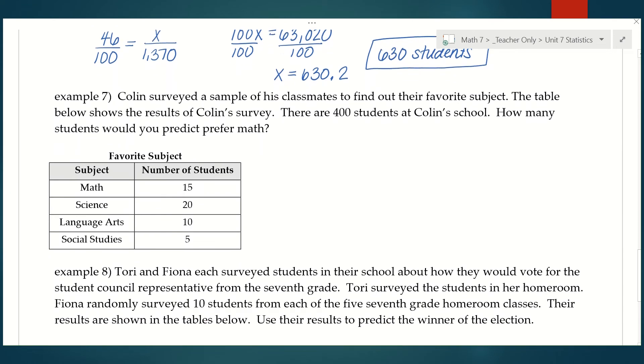Example seven. Colin surveyed a sample of his classmates to find out their favorite subject. The table below shows the results of Colin's survey. There are 400 students at Colin's school. How many students would you predict prefer math? Based on his survey results, we can see that 15 students chose math as their favorite subject. So 15 is my part. To get the whole, I have to figure out how many total students he surveyed, so we need to add these up.